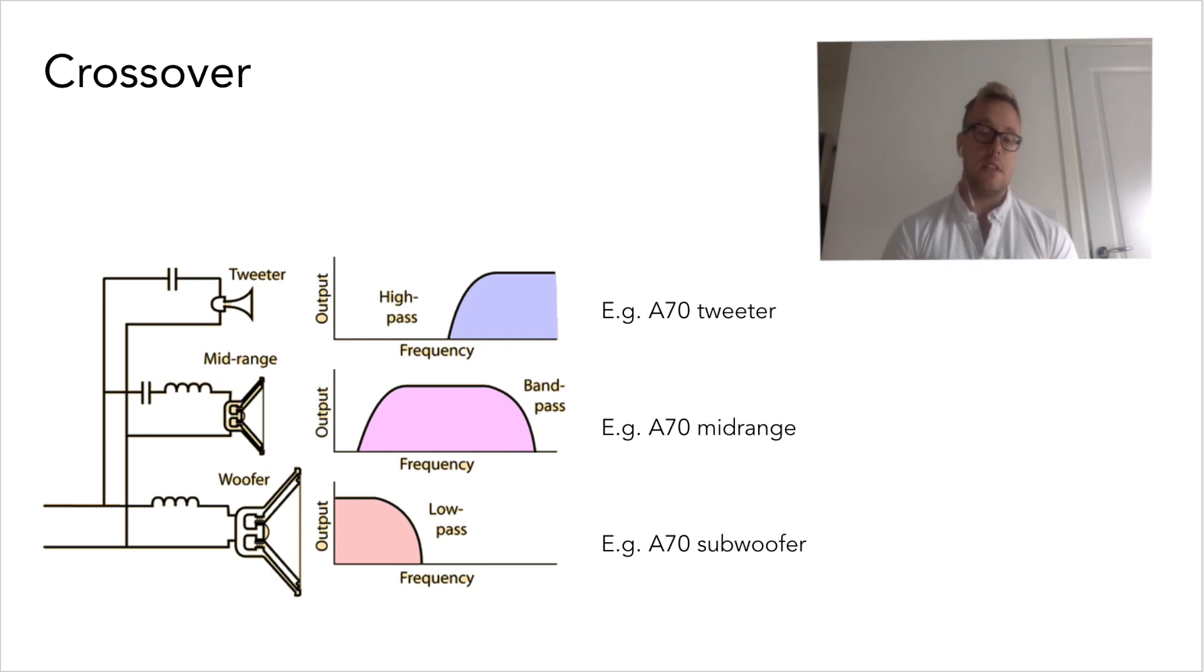There are various advantages and disadvantages that are usually related to cost and flexibility, but actually you see passive crossovers quite often. In fact, there's a passive crossover within the A70 for the tweeter, even though we use a digital crossover between the subwoofer and the mid-range.